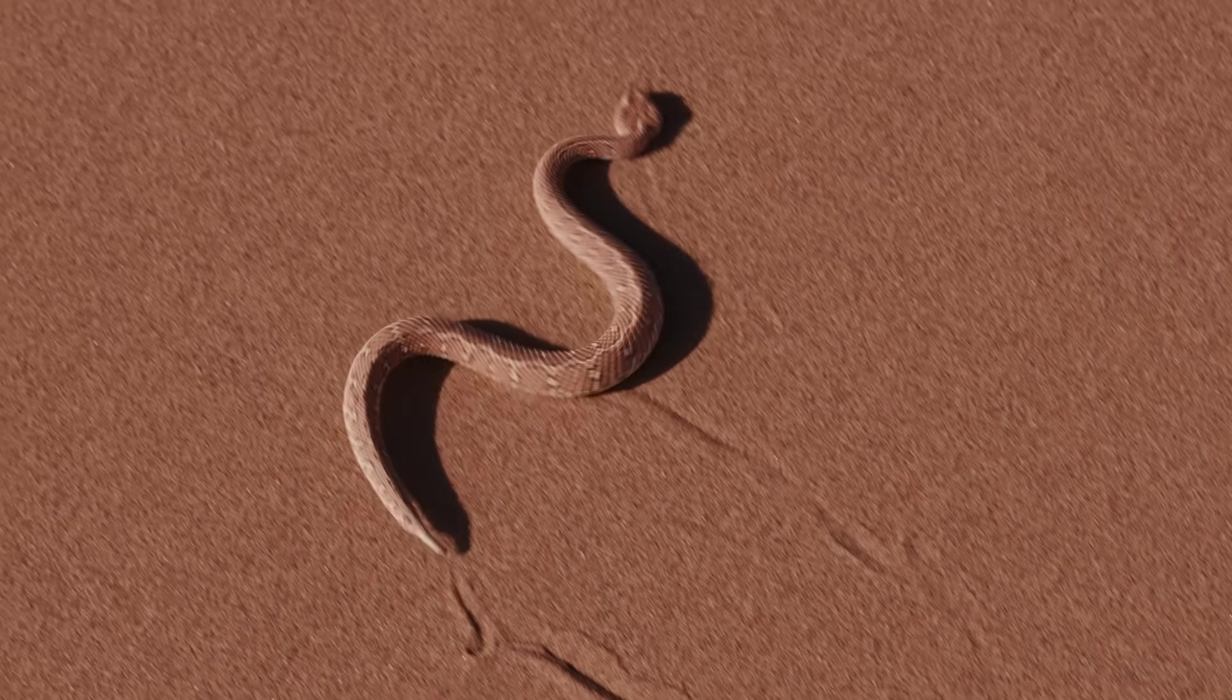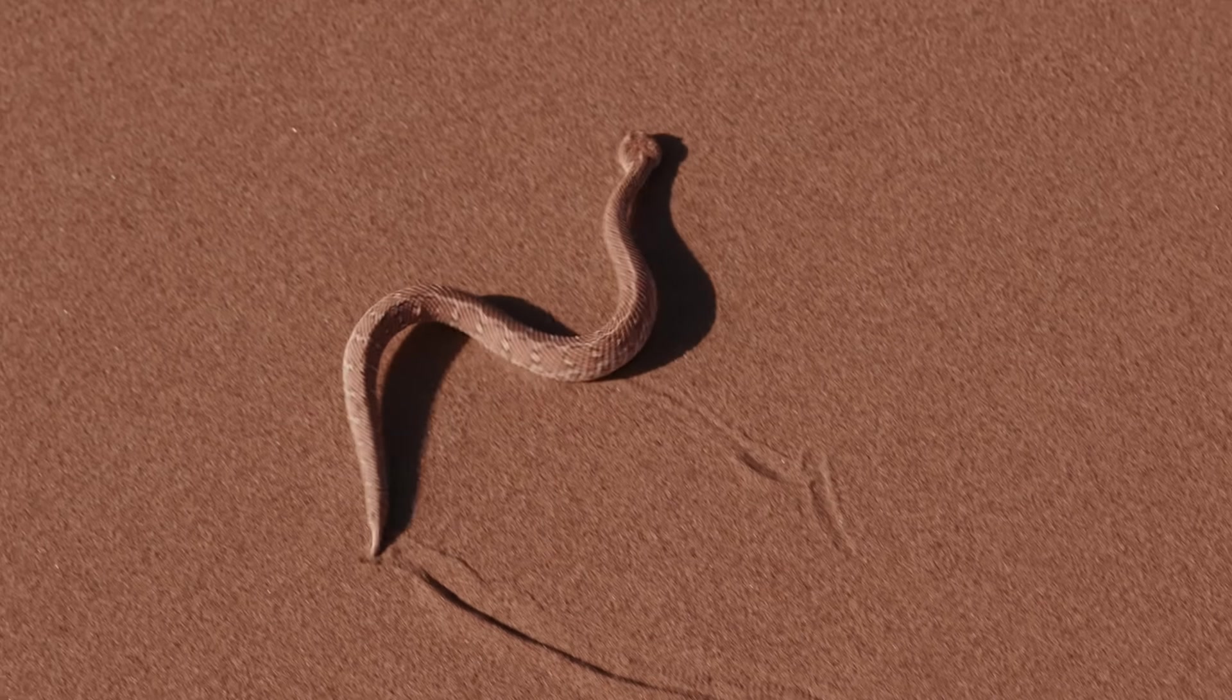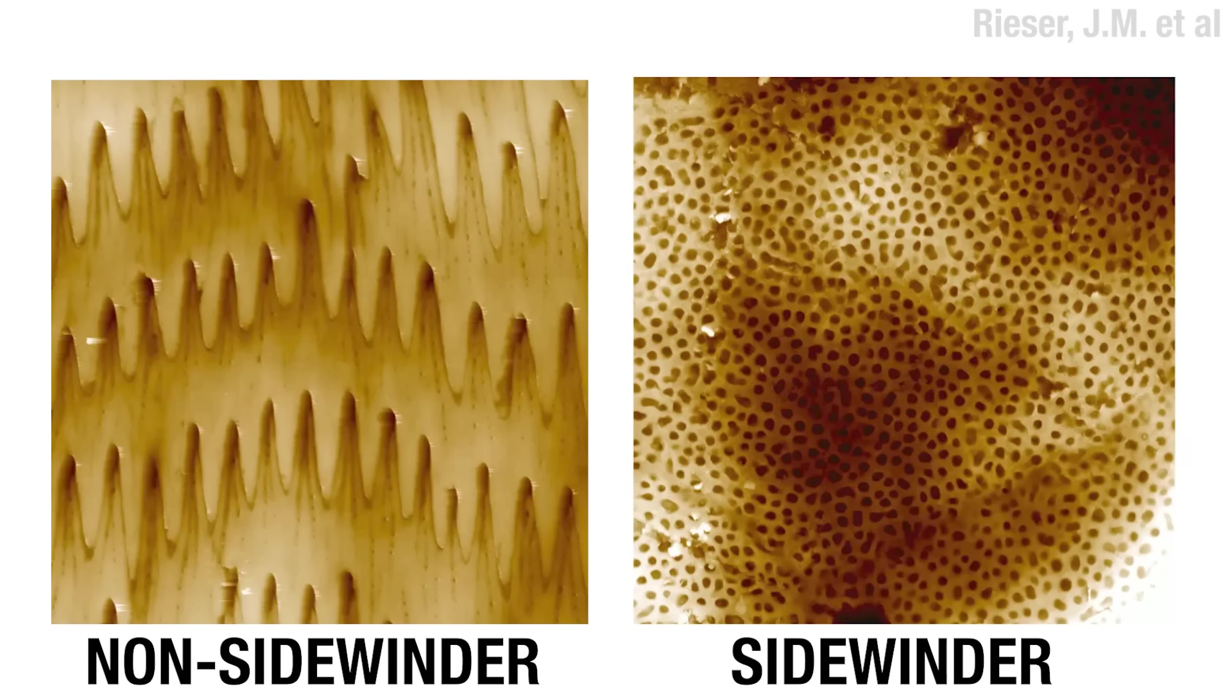This movement is quite versatile. You can reverse that wave and move the other way, or even go around in a circle and you leave your footprints to boot. Now because their movement isn't in the direction of that head-to-tail line of their bodies, their belly scales have quite different microstructures. Instead of those toothed ridges, they have a smooth porous surface, which minimizes belly friction as they push off with the side of their bodies.